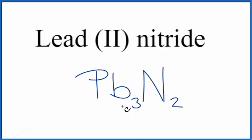But let's check our work here. We said lead, that's 2 plus, and we look the nitrogen up, that's 3 minus. So 3 times 2 plus, that's 6 plus. 2 times 3 minus, that's 6 minus. These two numbers, they add up to zero.